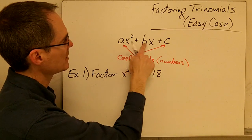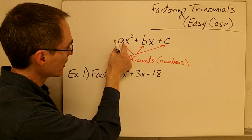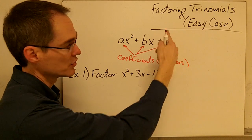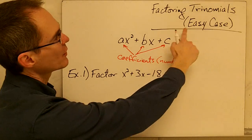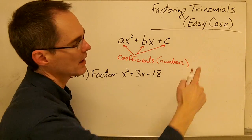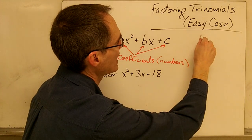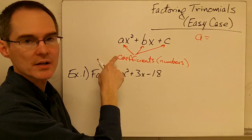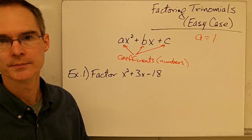So a, b, and c are just going to be numbers: a is in front of x squared, b is in front of x, and c is just here by itself. The thing that makes easy case trinomials easy is the fact that the a value — that coefficient in front of x squared — is always equal to 1.